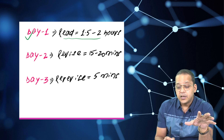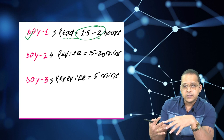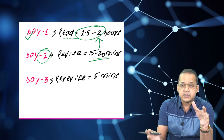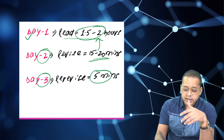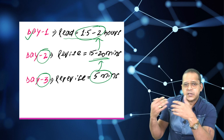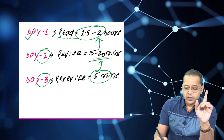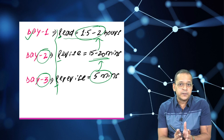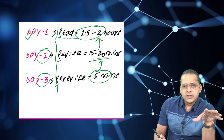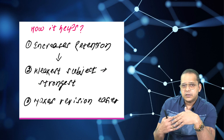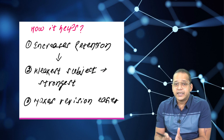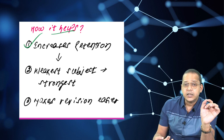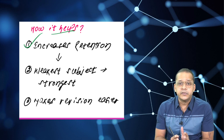The most important part begins from Day 2 and Day 3. Suppose you read a particular topic on Day 1 for 1.5 to 2 hours. On Day 2, you revise that topic for 15 to 20 minutes. On Day 3, you re-revise — just 5 minutes — whatever you studied two days ago. So the cycle is: read on Day 1, revise on Day 2, re-revise on Day 3. This is what will make pharmacology rock solid.